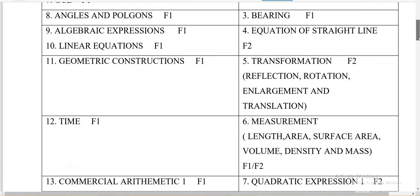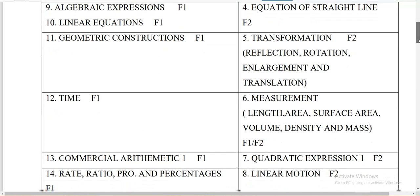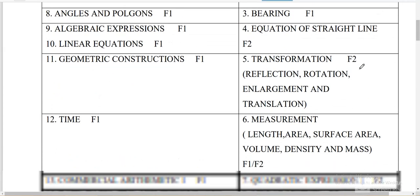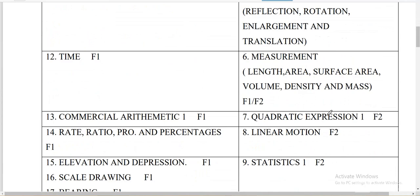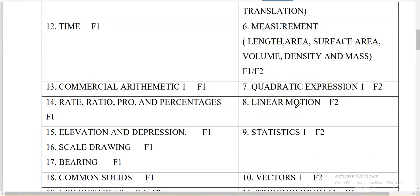Then we have transformations: reflection, rotation, enlargement, and translation — that is Form 2 work you need to prepare very well. Also measurement: length, area, surface area, volume, density, mass — Form 1 and Form 2 work combined. Prepare well there. Then quadratic expressions — that is not as common, but you can prepare. Then linear motion — very common.